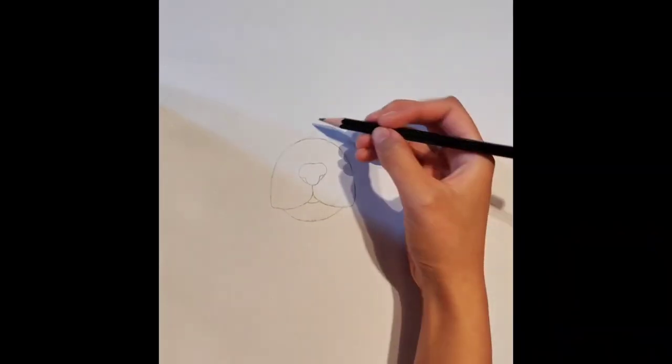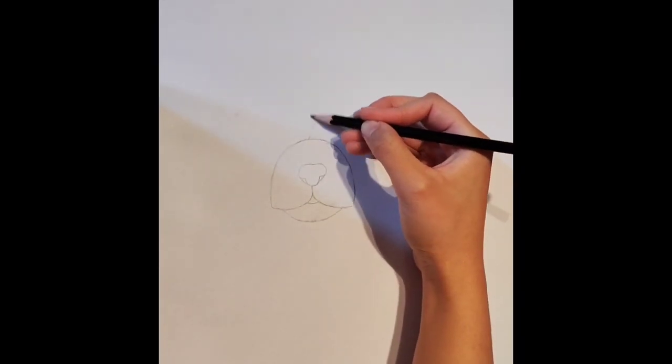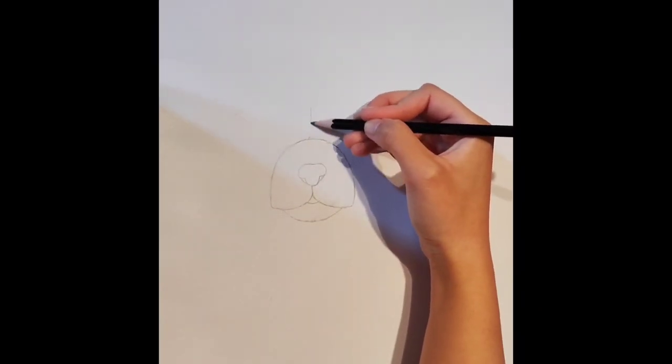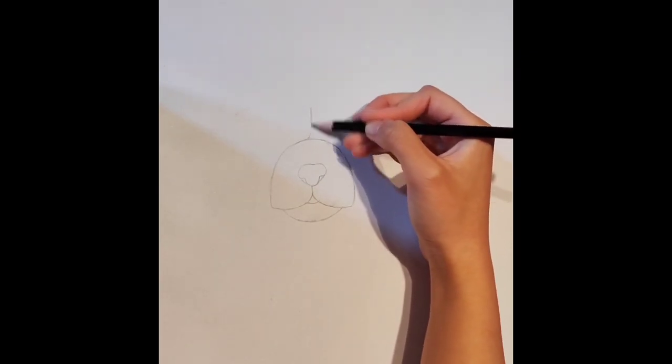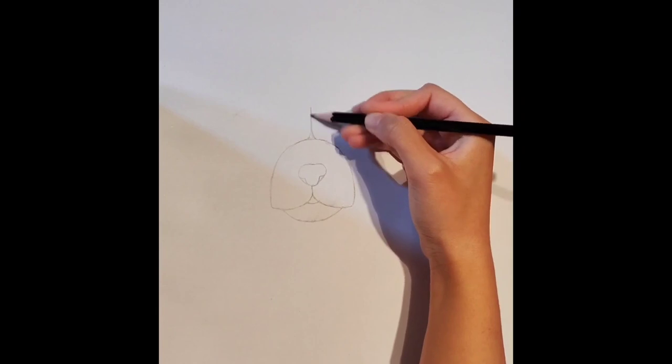Now going back to the centre, we are going to draw a vertical line that goes upwards. Create a tiny triangle in between where we will add more shading to it later.